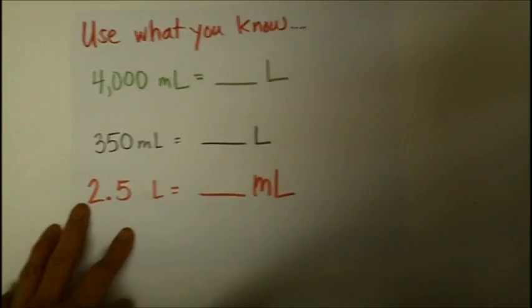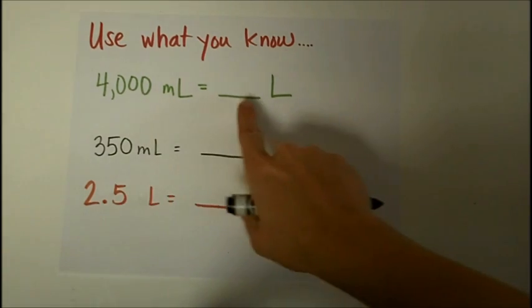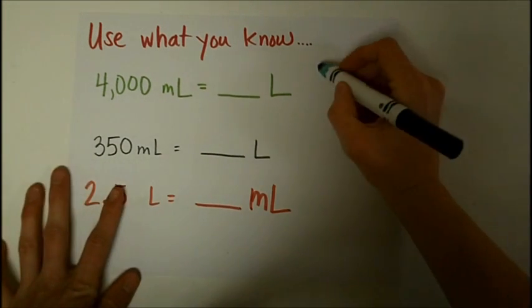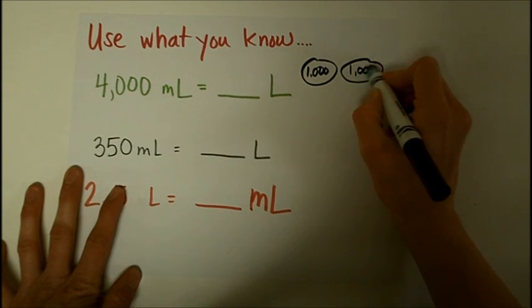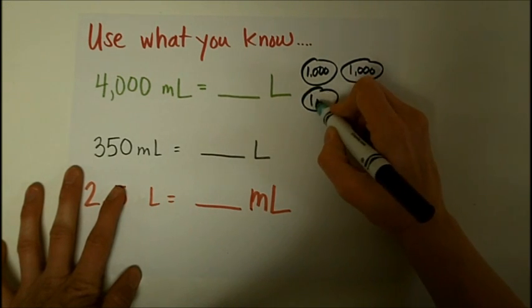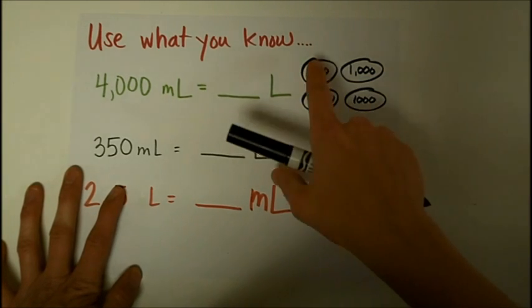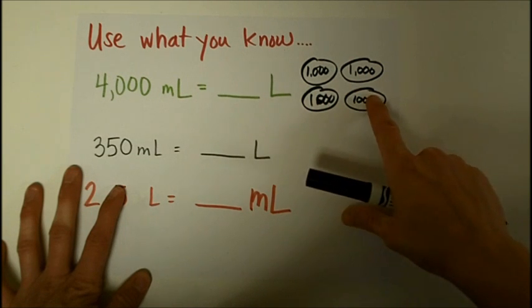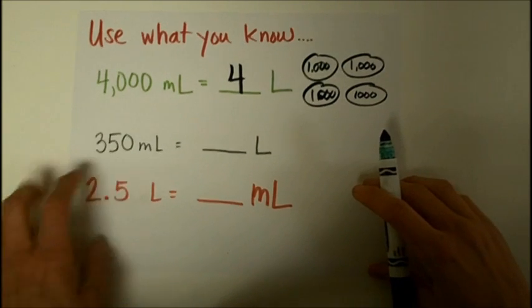So let's use what we know about how milliliters and liters are related to see if we can complete these problems. I have 4,000 milliliters, and I want to figure out how many liters that is. Well, if you draw that, I have 1,000 milliliters, and another 1,000 milliliters, and another 1,000 milliliters, and a fourth 1,000 milliliters. I know that this is one liter, and this is a liter, and this is a liter, and this is a liter. So all together I have 1, 2, 3, 4 liters. That was a pretty easy one.